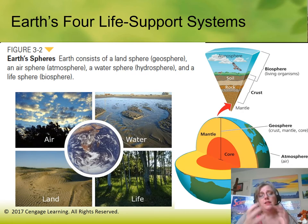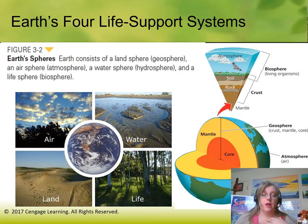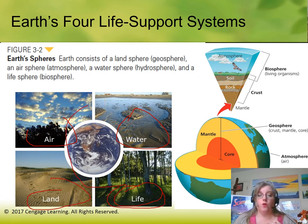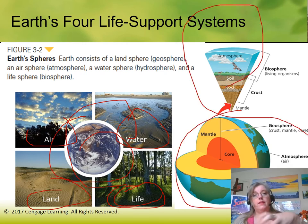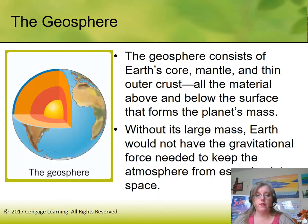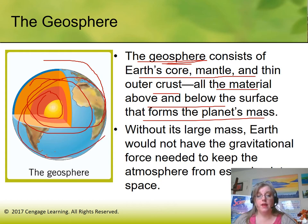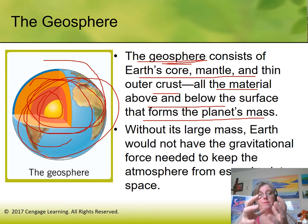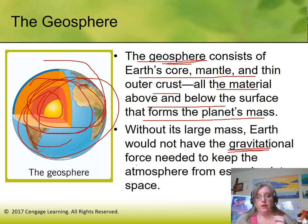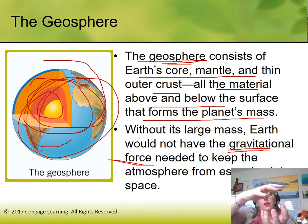Within these four life support systems, nutrients and matter are transported from one area to the next. The atmosphere is the air, the hydrosphere is the water, the geosphere is the land, and the biosphere is life — these four interact to send nutrients and matter throughout the earth. The geosphere is the first sphere: it's the earth's core, mantle, and crust — all the material that forms the planet's mass.